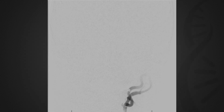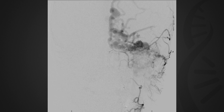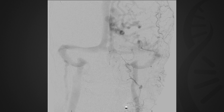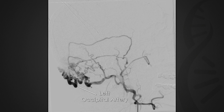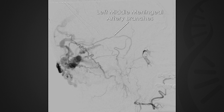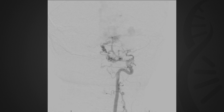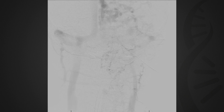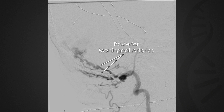Diagnostic cerebral arteriogram showed a complex dural arteriovenous fistula with multiple feeding vessels from the left external carotid artery, including branches off of the left occipital artery and middle meningeal artery. There was also supply to the fistula from the posterior circulation from hypertrophic posterior meningeal arteries arising from the bilateral vertebral arteries.